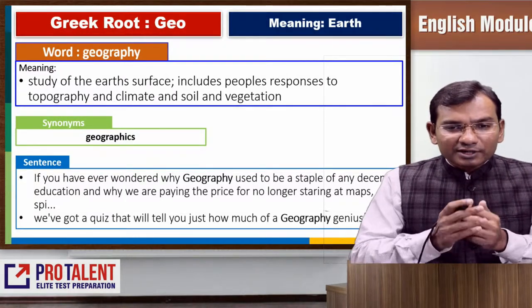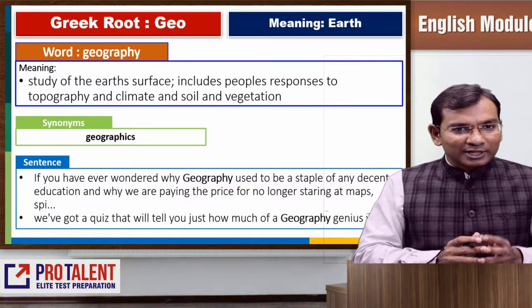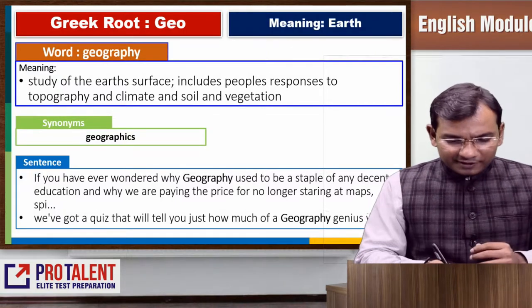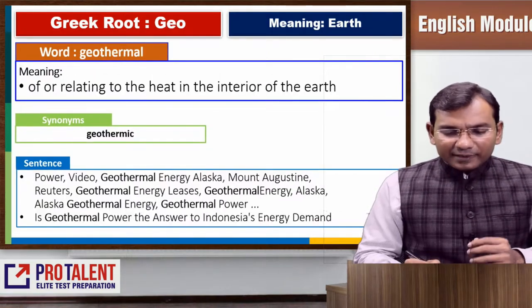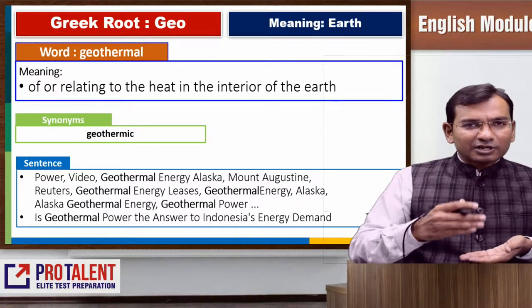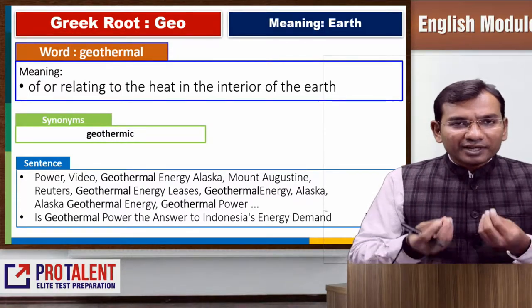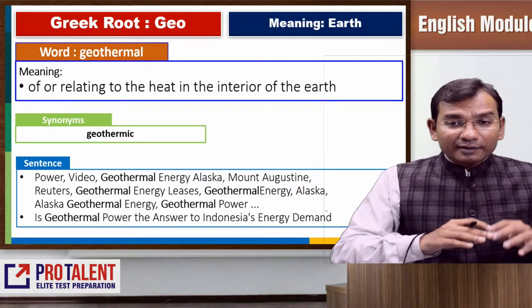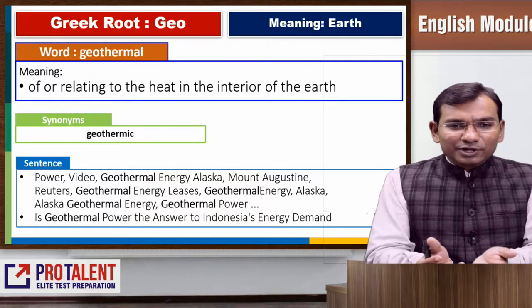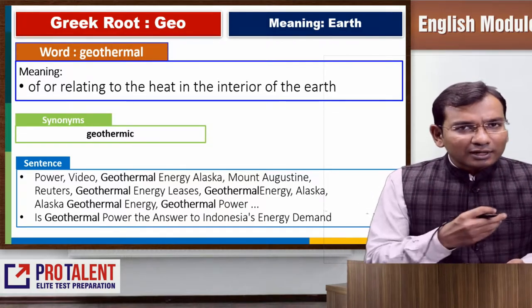Geothermal refers to the heat coming from the earth. So geo means earth, and thermal means heat — heat that originates from within the earth. That covers the root GEO.